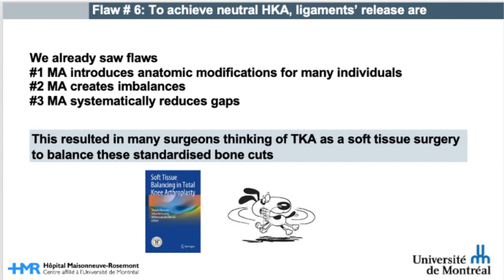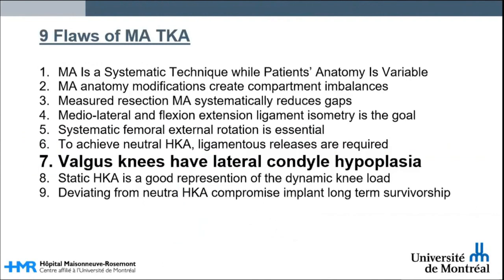We have already seen several flaws: first, mechanical alignment introduces anatomic modifications for many individuals; second, mechanical alignment creates imbalances; third, mechanical alignment systematically reduces gaps. This resulted in many surgeons wrongly thinking of total knee arthroplasty as a soft tissue surgery to balance these standardized bone cuts.